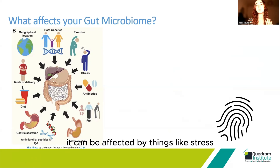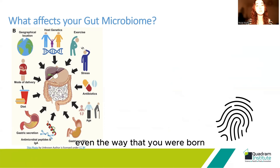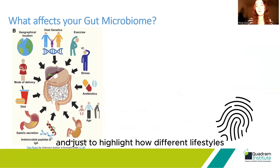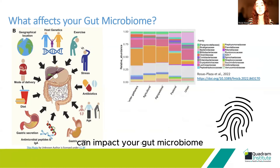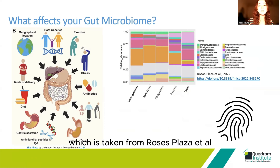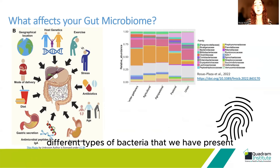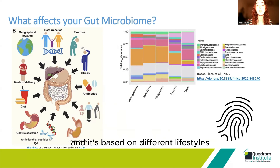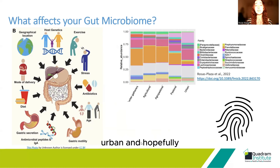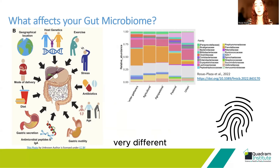It can be affected by things like stress, exercise, diet, even the way that you were born — whether it was c-section or natural. Just to highlight how different lifestyles can impact your gut microbiome, this image from Rosas Plaza et al. shows different types of bacteria present within our gut based on different lifestyles — things like hunter-gatherers, agricultural, and urban — and you can see from a snapshot that it's very, very different depending on the type of lifestyle you lead. That's what makes it so interesting to study.